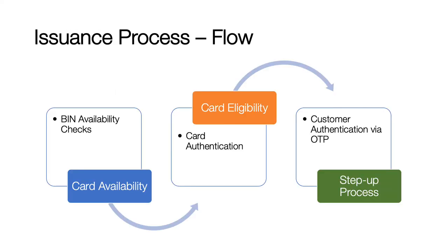At a high level, the tokenization issuance process can be split into three important processes. First is card availability — this is where, when a customer enters the card number in the mobile wallet, the token requester checks with the token service provider whether the BIN is eligible for card tokenization.